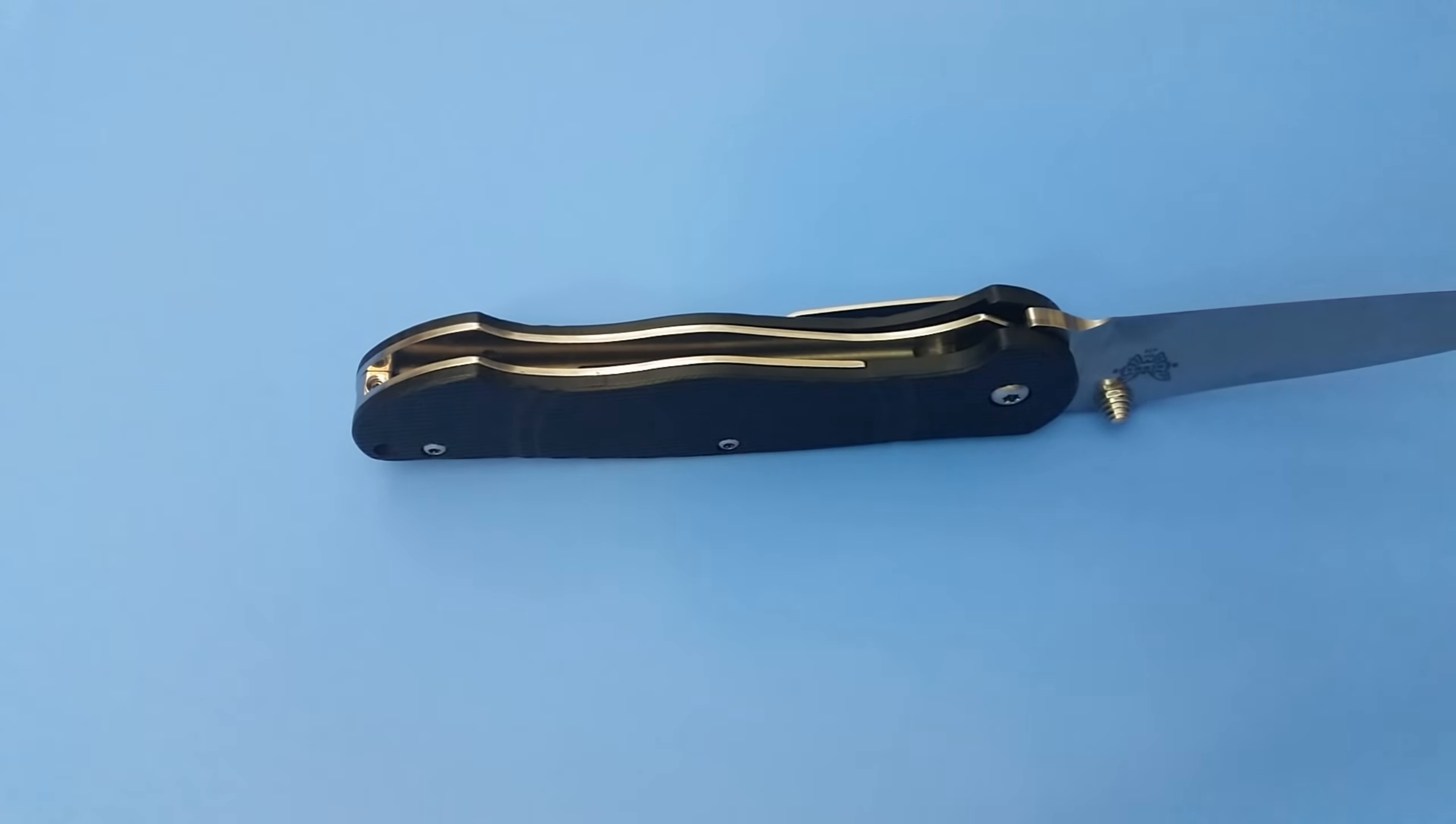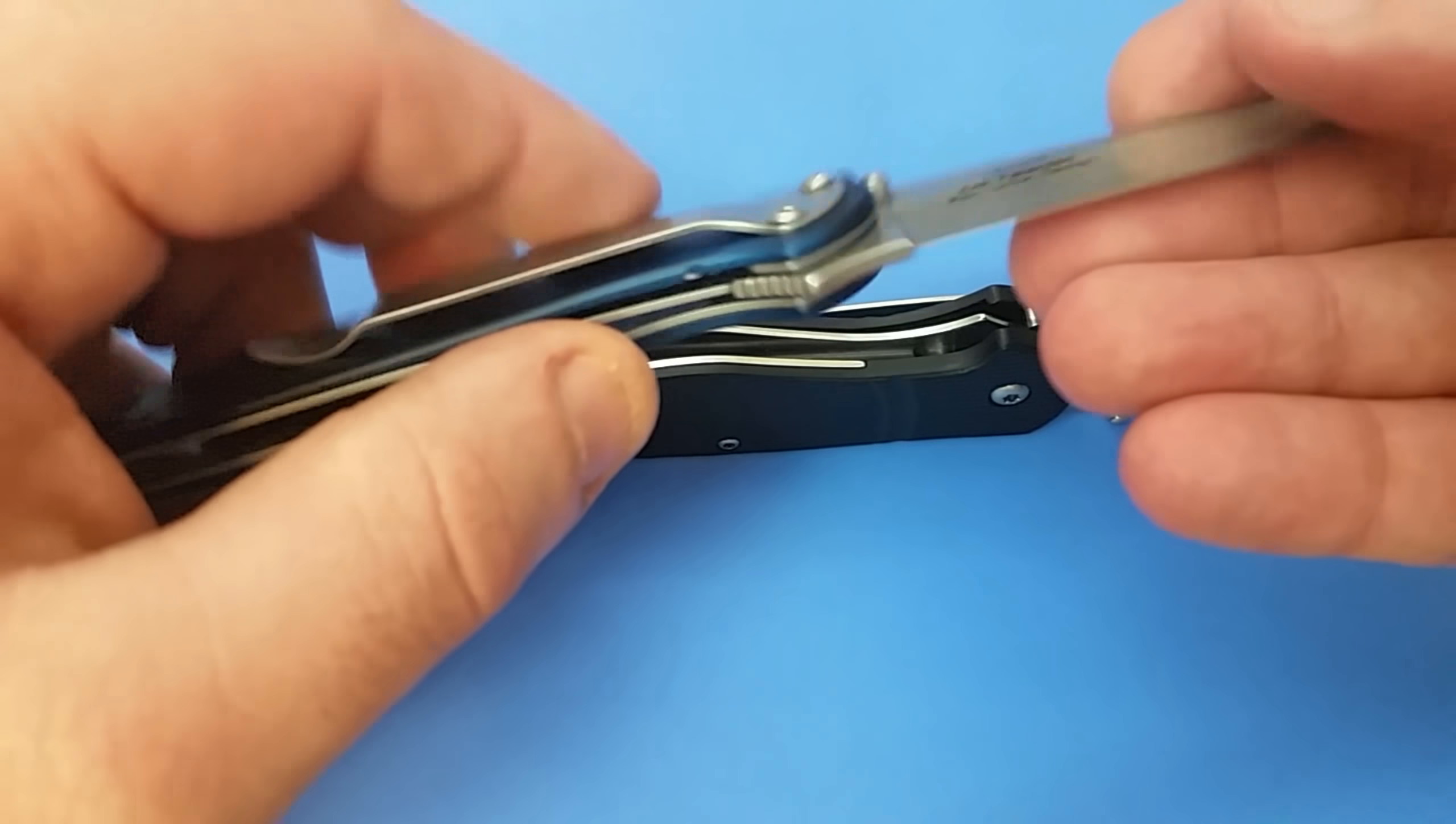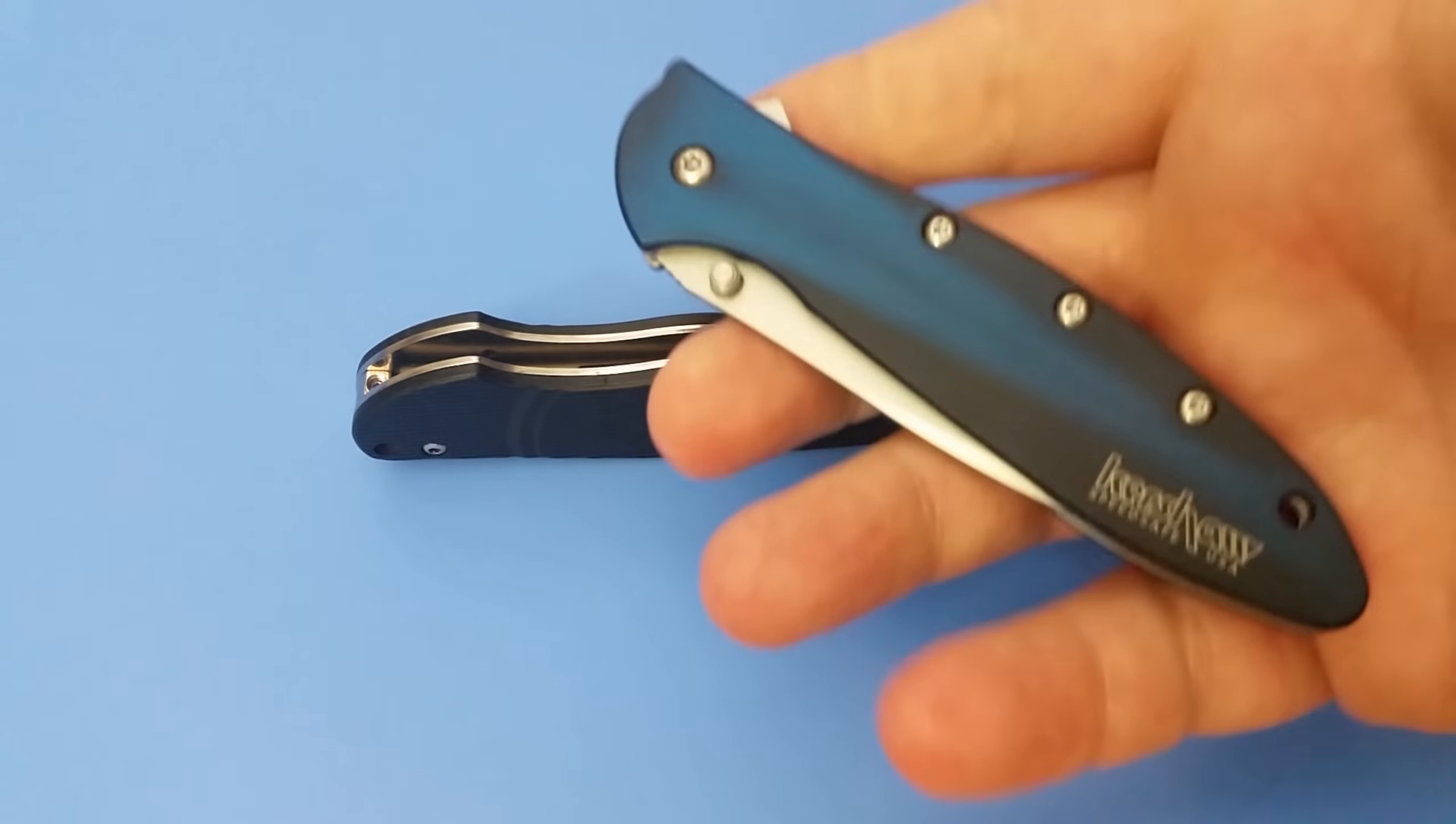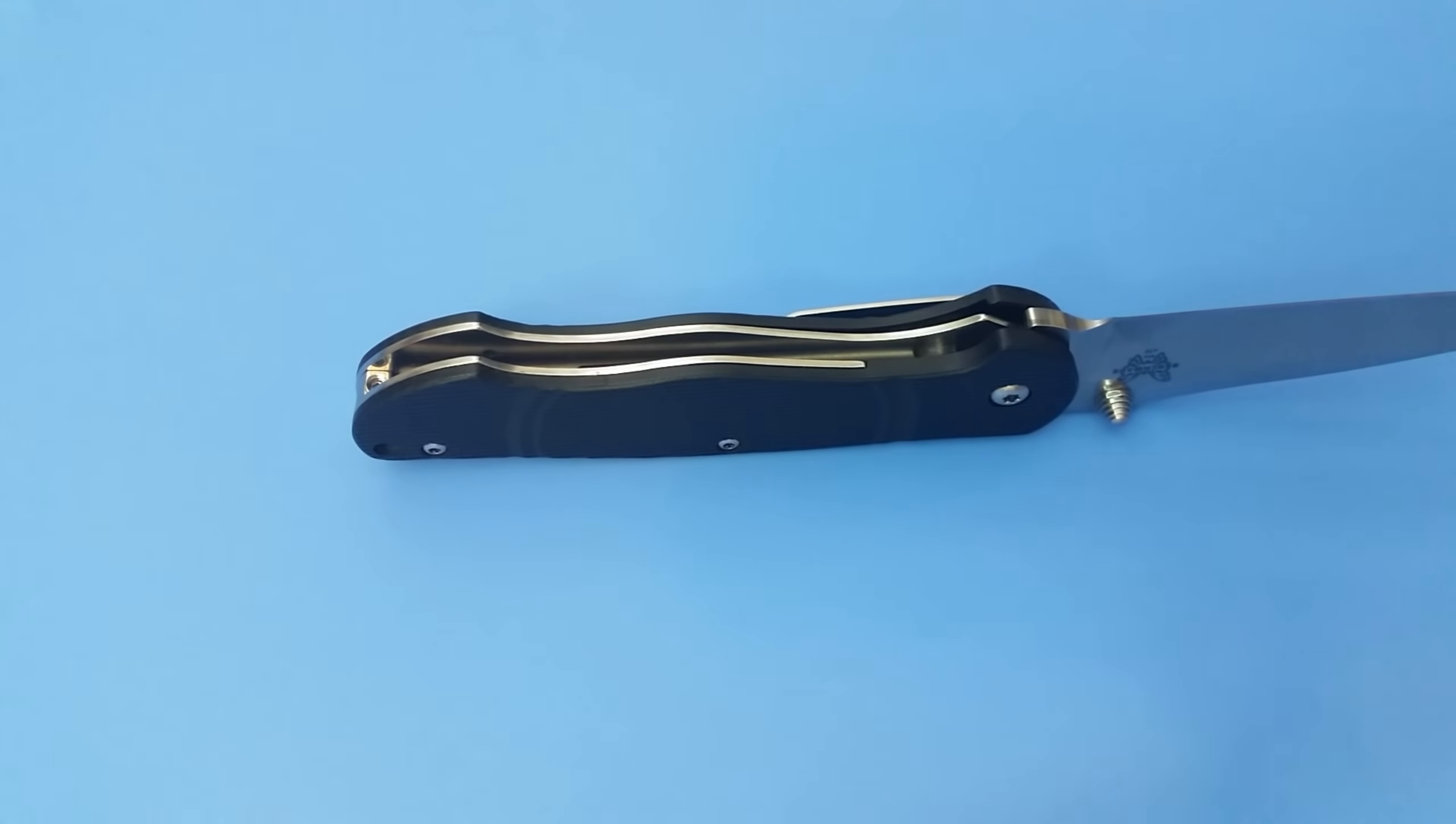One of them, if you take like the Kershaw Leek or most SpeedSafe knives, they're all just running on like little torsion bars and springs that are nested in the liners. And you have this opening mechanism that's very functional, it works well, holds up decently well over time and use. And even though it will eventually need to be replaced, it's protected because it's housed behind a liner. And yeah, I mean I like it. It's my preferred assisted opening to be honest.